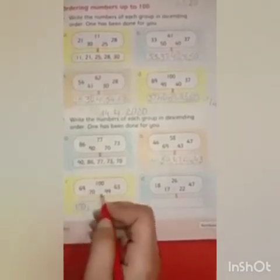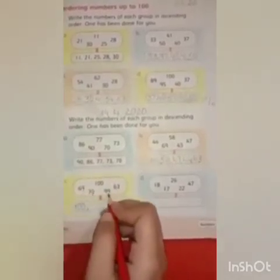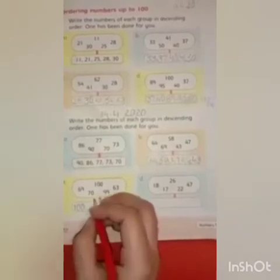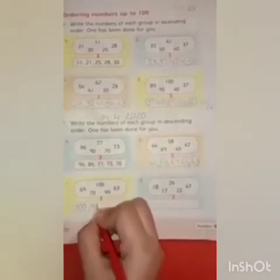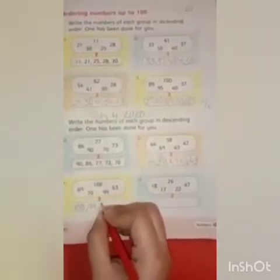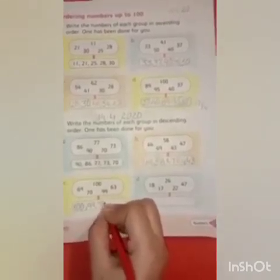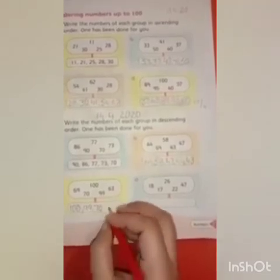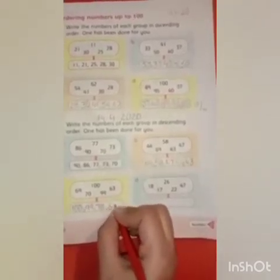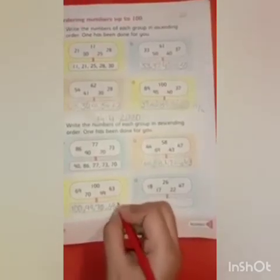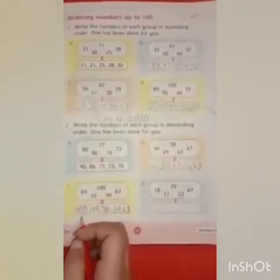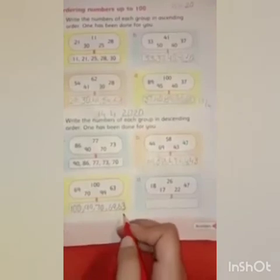Then we have four numbers: 69, 70, 99, and 63. Which one is smaller than 100? It's 99. Then 70. Now we have just two numbers: 63 and 69 — which one is smaller than 70? It's 69. The last number is 63. At point C we find out 100 as the greatest number and 63 as the smallest number.